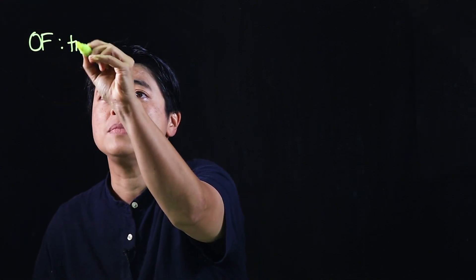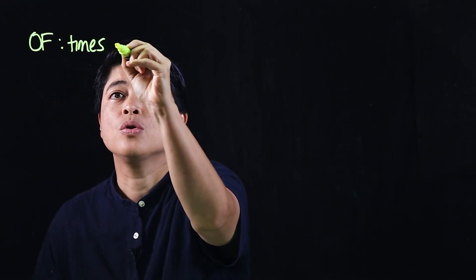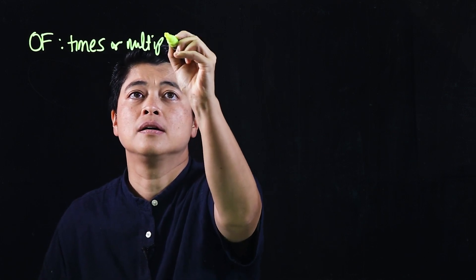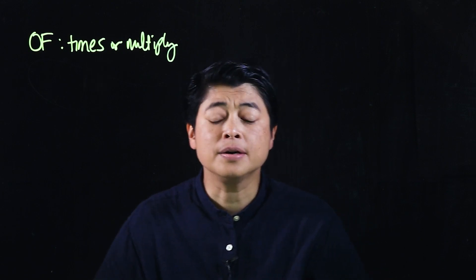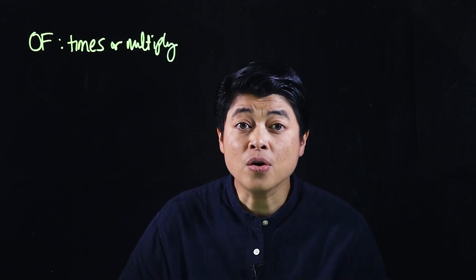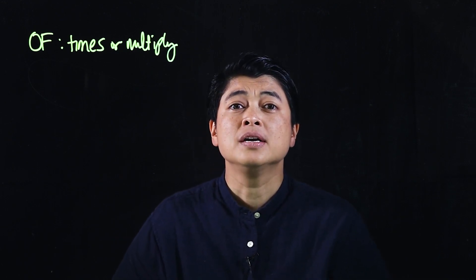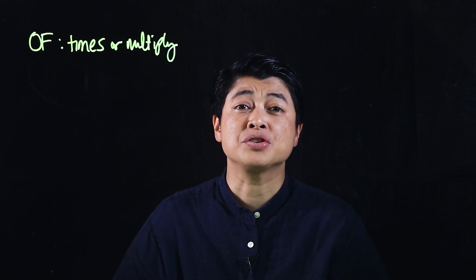We need to remember when we see the word 'of' that should mean times or multiply. We also need to remember that in Grade 4 we already started the lesson of taking a fraction of a whole number, so the strategy I'll be showing will be a continuation of Grade 4 strategy.